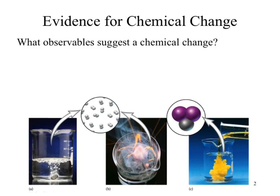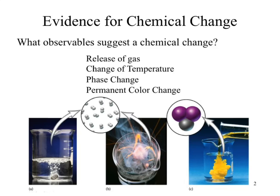What observables suggest chemical changes? We listed a couple: the release of a gas, and a change in color. But the first example I used was boiling water, which releases gas — and we said that was a physical process. So we already have a contradiction. The distinction is: if we mix two chemicals together without supplying energy and a gas or new phase appears, the chemicals did that on their own — no supply of energy on our part. That's a chemical change.